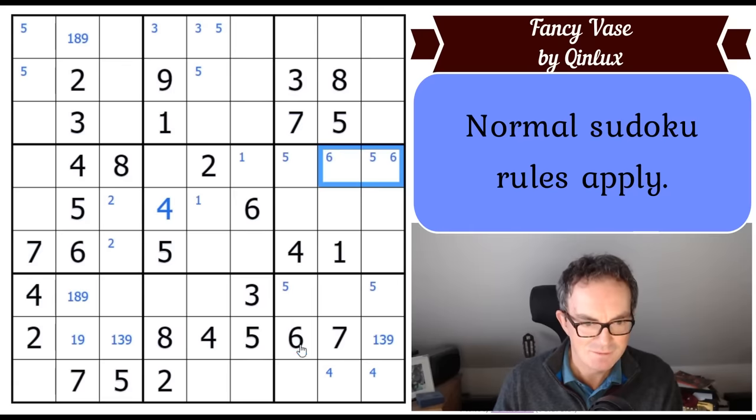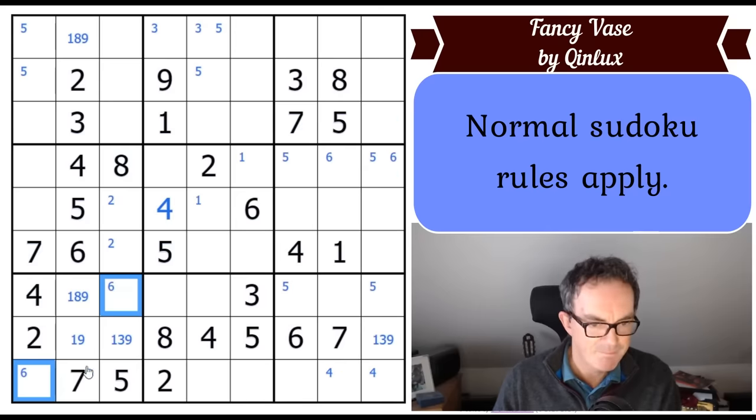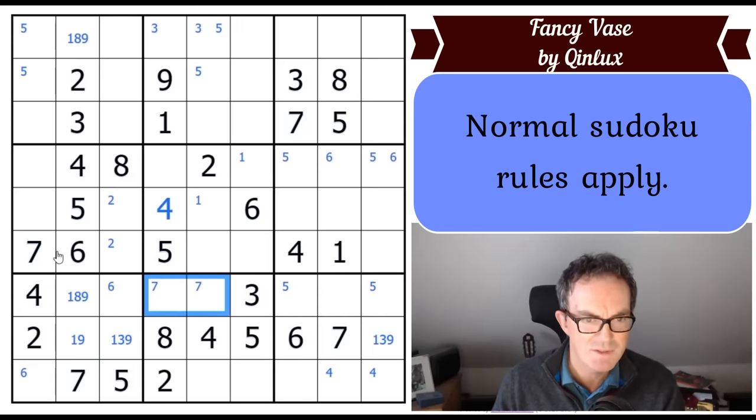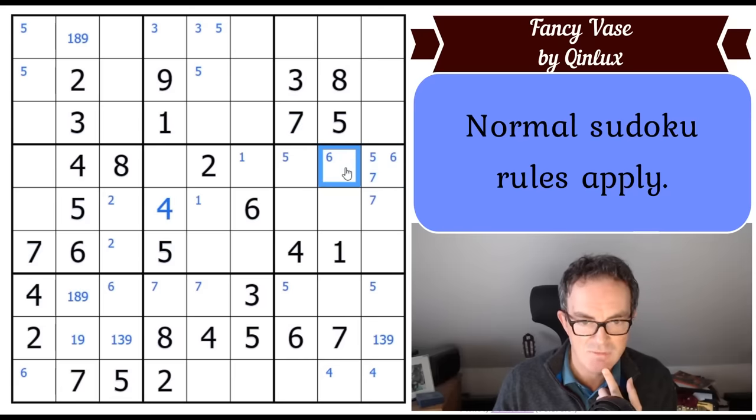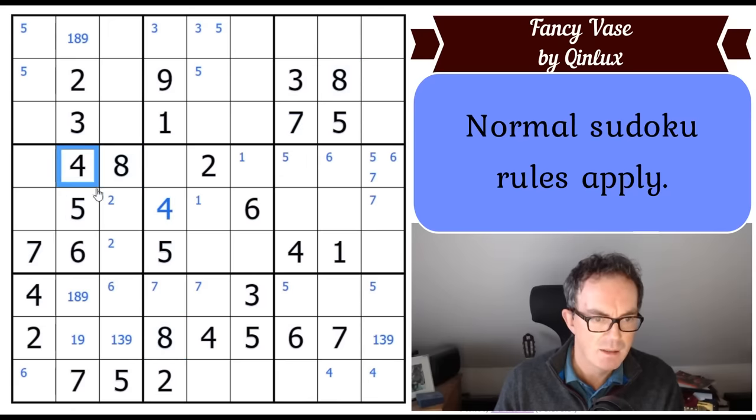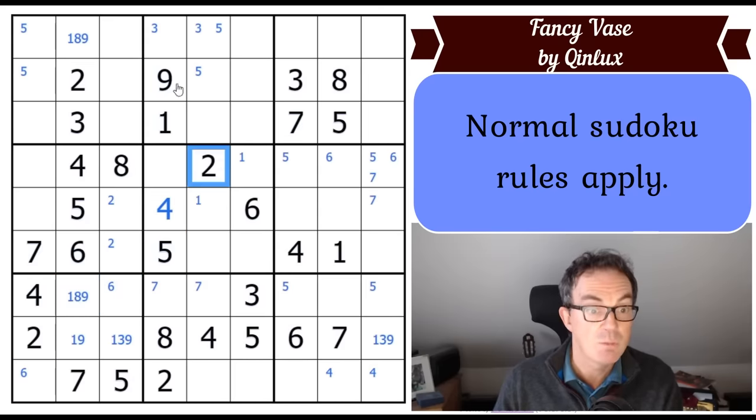Sixes are only in two places in box seven down there. Sevens, again, two. We've got lots of digits just being in two places in a box. Quite an arrangement of five, sixes, and sevens. Eight would become restricted. There's only one nine in the grid.